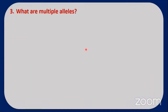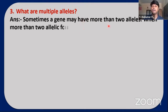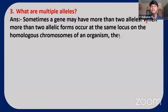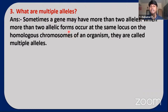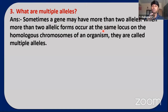Next question: What are multiple alleles? Sometimes a gene may have more than two alleles. When more than two allelic forms occur at the same locus on the homologous chromosomes of an organism, they are called multiple alleles. A single gene usually has two alleles; if a gene has more than two alleles it is called multiple allelism.